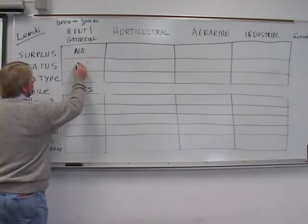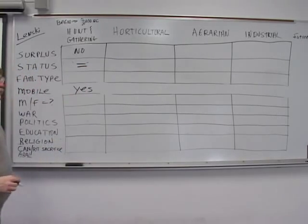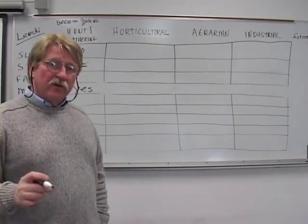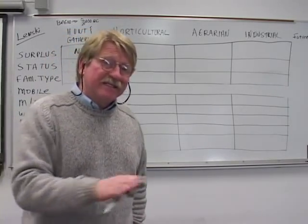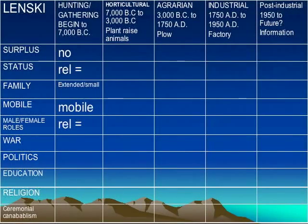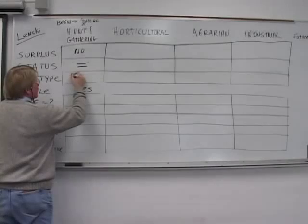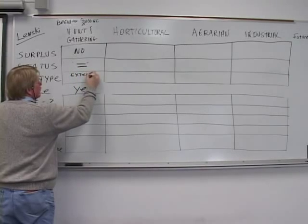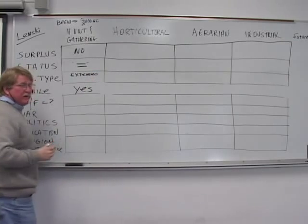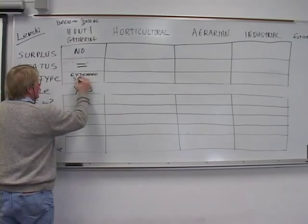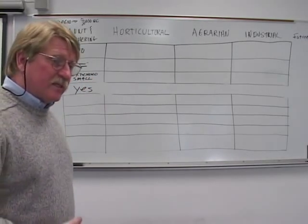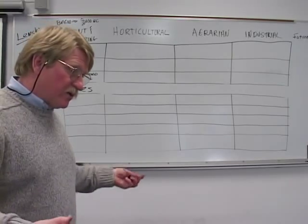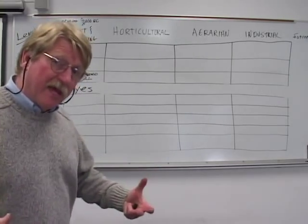Now their status was relatively equal because status is determined to a large extent by what you own. If everybody's owning about the same amount of stuff, status isn't much different. There's not a surplus, so status is relatively equal. The family type is extended, meaning mom, dad, uncles, aunts, but relatively small because they simply couldn't feed very many people. These typical bands are about 40 people big, sometimes bigger, and sometimes there's such little food they have to split that band for part of the year.